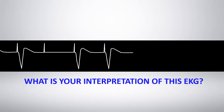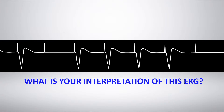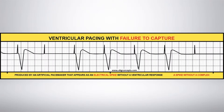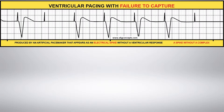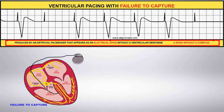What is your interpretation of this EKG rhythm strip? Ventricular pacing with failure to capture. Ventricular pacing with failure to capture is produced by an artificial pacemaker that appears as an electrical spike without a ventricular response — a spike without a complex.